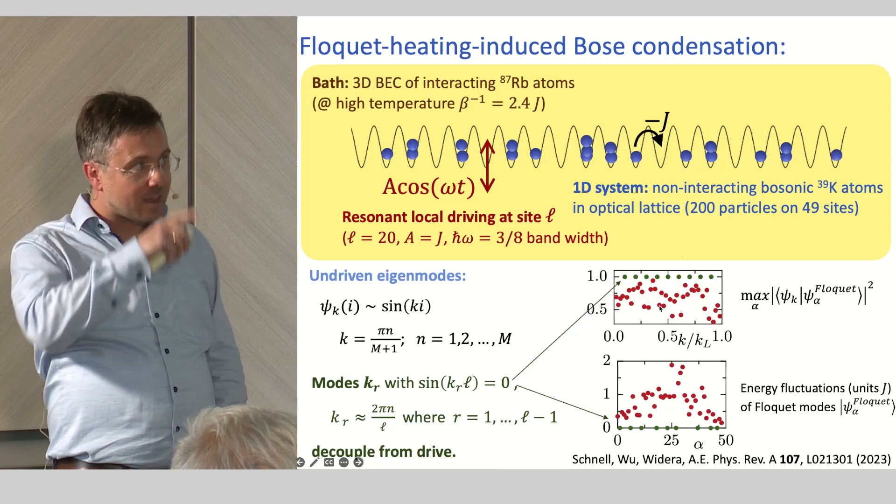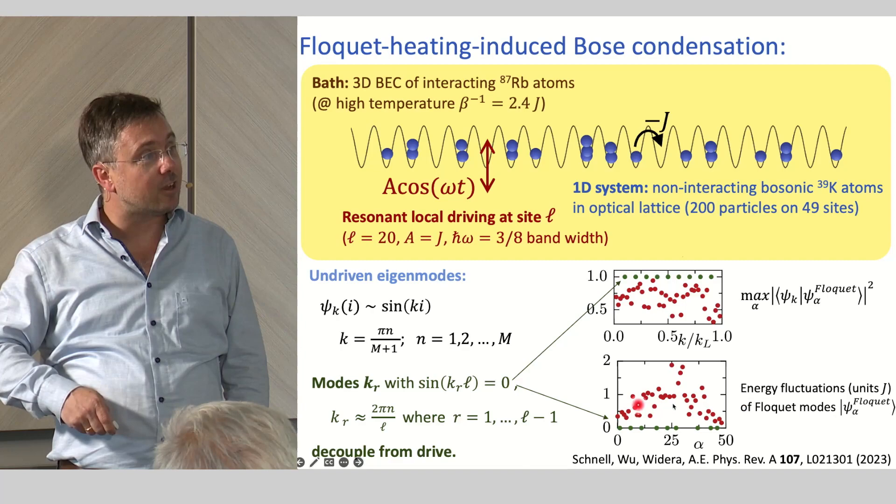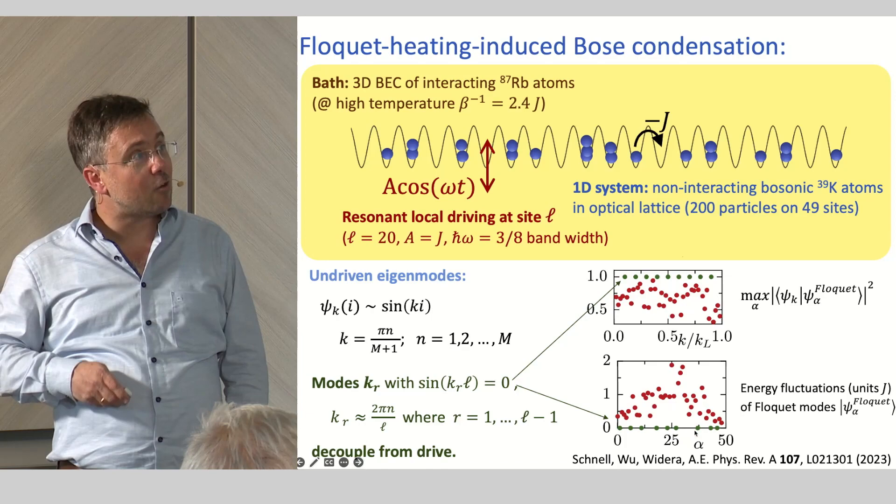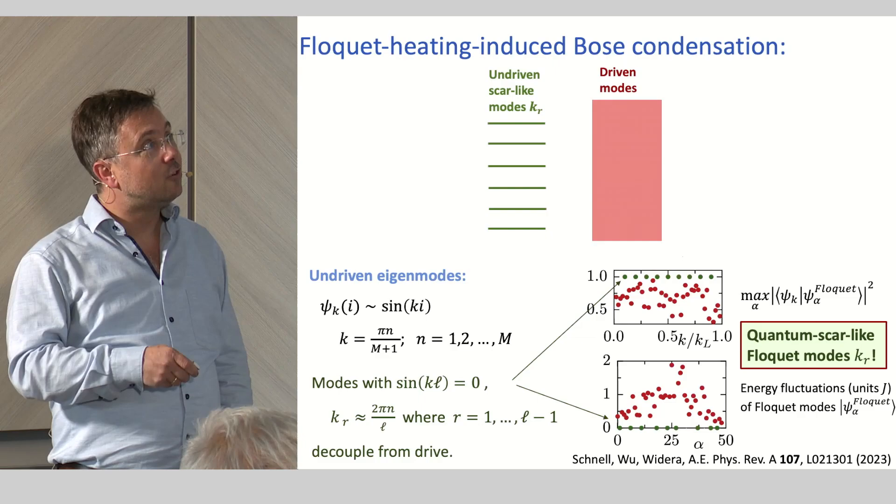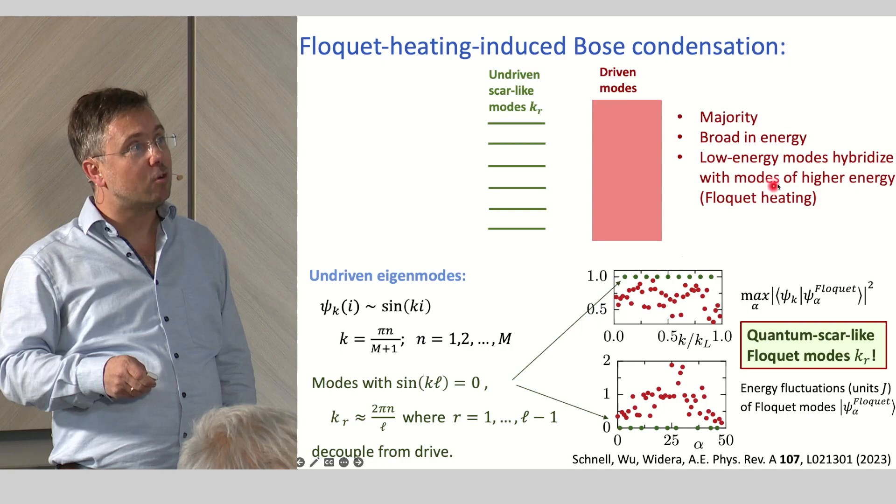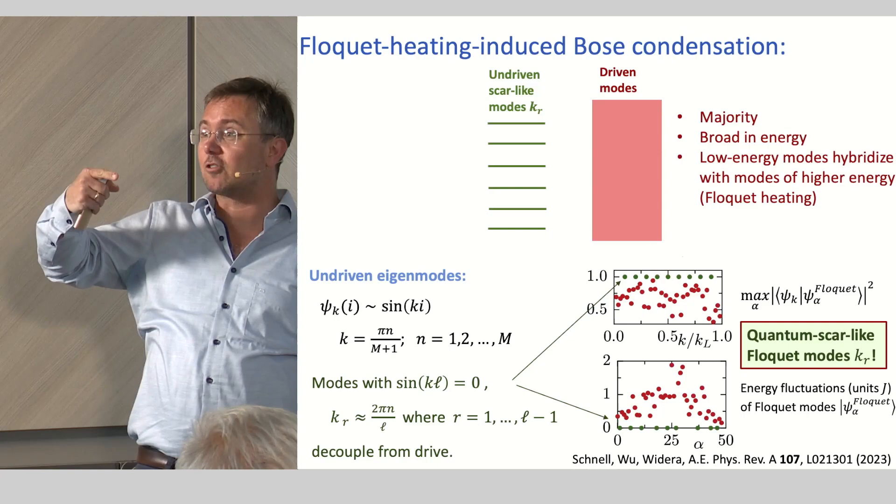Now these states have a property a little bit like SCAR, like quantum SCARs. Because if you look at the energy fluctuations of these modes, all the driven modes have rather broad energy spectrum because they are superpositions of many energies because you drive resonantly. But these are not because they are still the undriven eigenstates. And now you can split your system up into the undriven SCAR-like modes and the driven modes. These driven modes are the majority. They are broad in energy. Low energy modes hybridize with high energy modes. So the spectrum becomes narrower in a sense if you look at the average energies. This is this Floquet heating. Every mode at the bottom of the spectrum will hybridize with some mode of higher energy and the average will be higher.